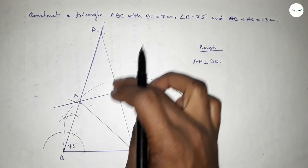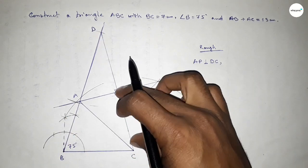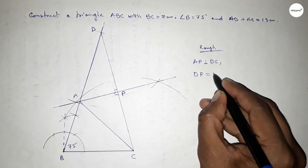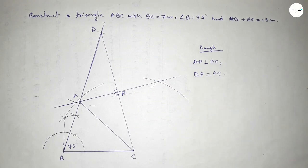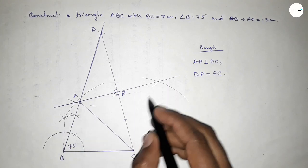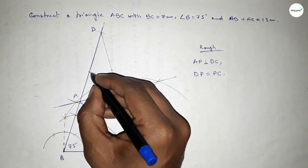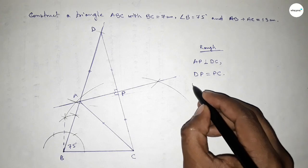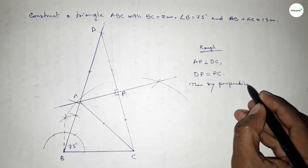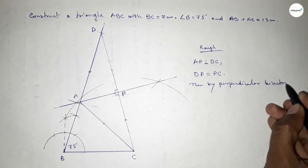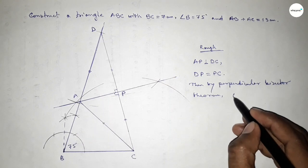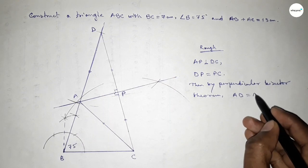AP is perpendicular to CD and bisects CD equally, so DP equals PC. By the perpendicular bisector theorem, AD equals AC.